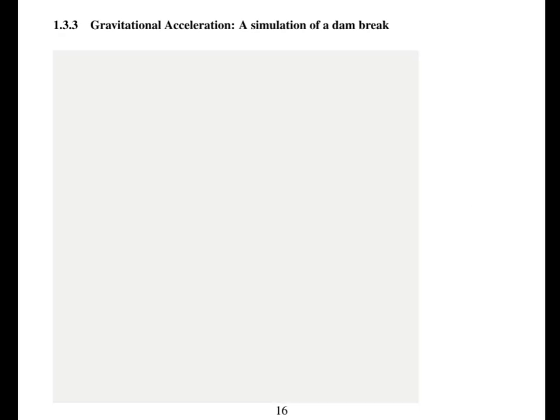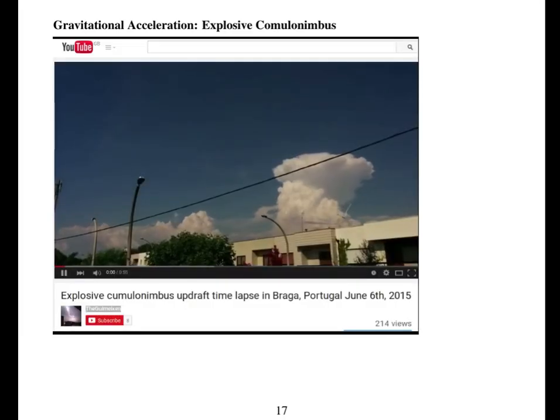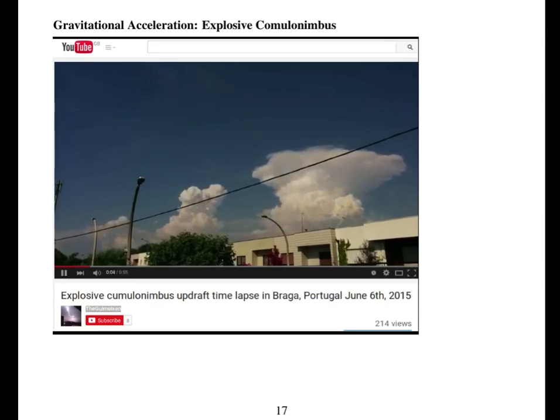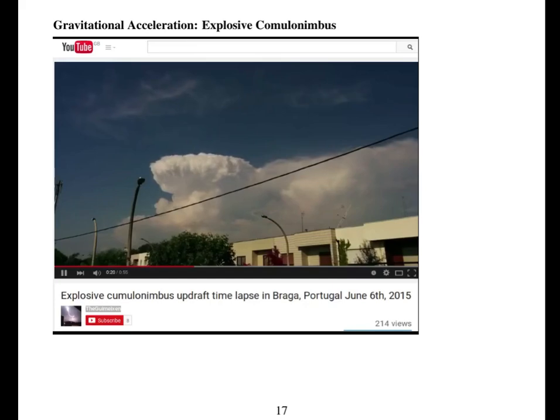This gravitational acceleration term is also big in formation of clouds. This is explosive cumulonimbus formation. So there's latent heat release which warms up the atmosphere. So you get some strong buoyancy which makes the air rise very quickly in this cumulonimbus. So again you can see the effect of the gravitational acceleration term in the momentum equation.